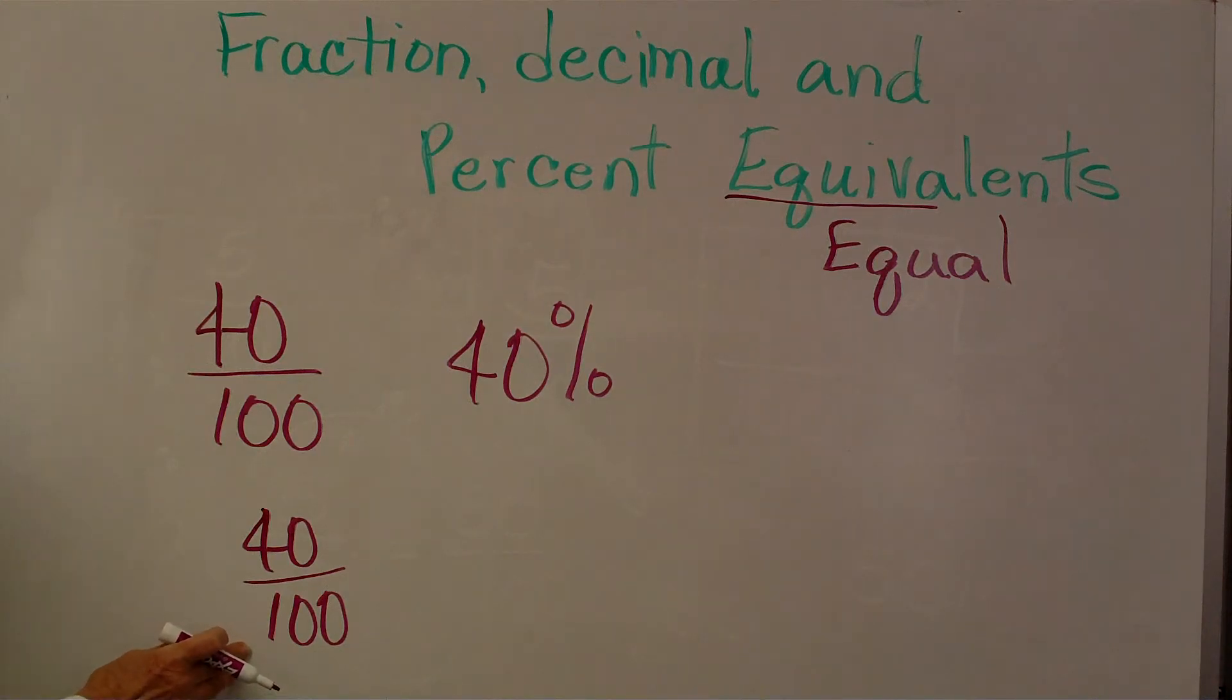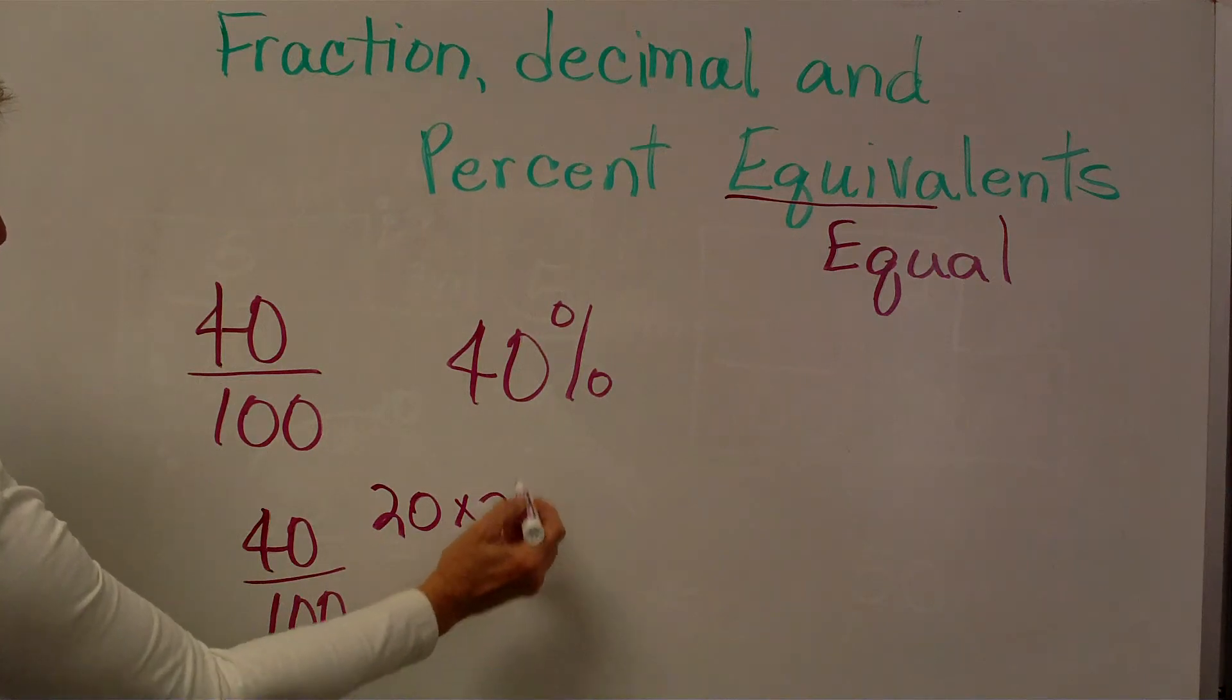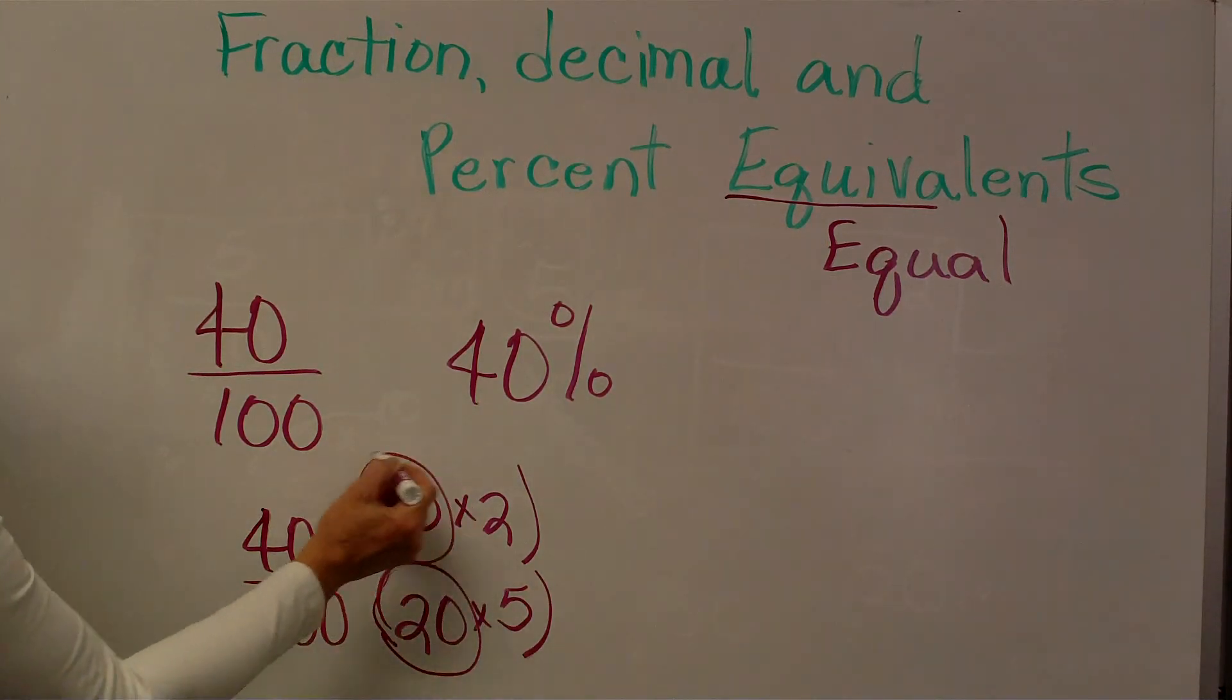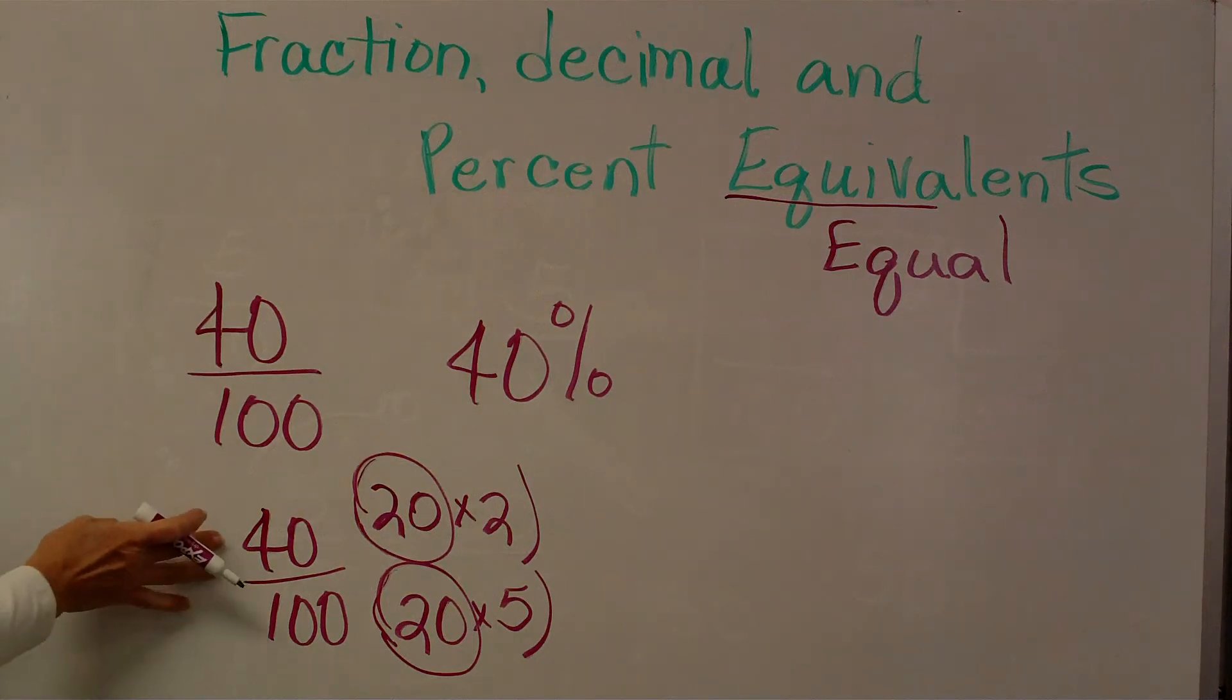I know that 20 times 2 is 40. I know 20 times 5 is 100. So, I'm going to use my greatest common factor of 20 to reduce my fraction.